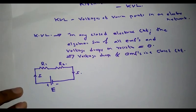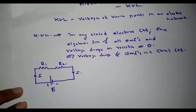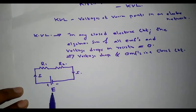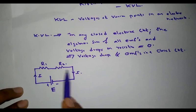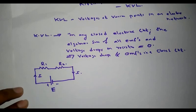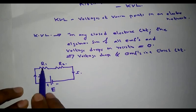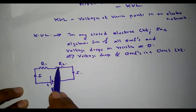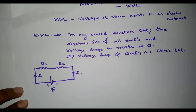According to Kirchhoff's Voltage Law, the algebraic sum of the EMF source and the voltage drops in resistors is equal to zero. That is, the drop in R1 and R2 plus E is equal to zero.